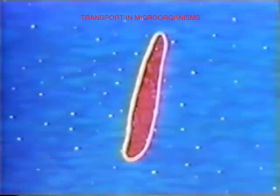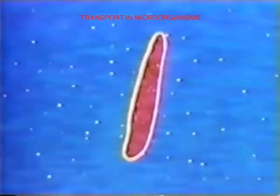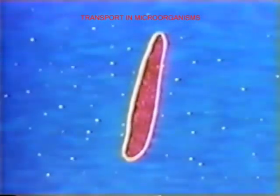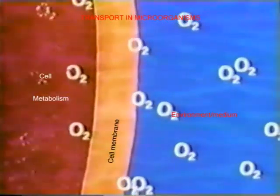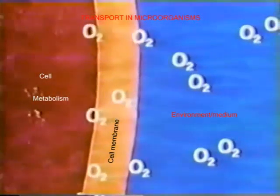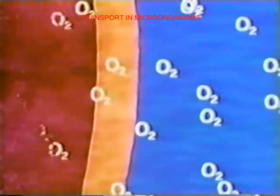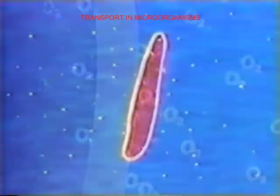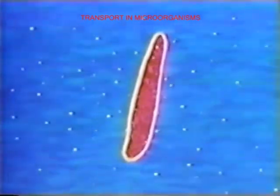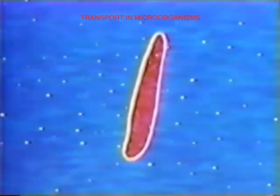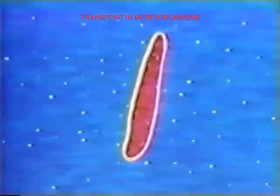Transport in microorganisms such as amoeba is through simple diffusion. An amoeba has a large surface area to volume ratio. When oxygen is at a higher concentration in the surrounding medium than inside the body, oxygen diffuses into the body through the entire body surface and is utilized in respiration, which produces carbon dioxide. When carbon dioxide and nitrogenous waste are at higher concentration inside the body than outside, they diffuse out through the entire body surface by simple diffusion.